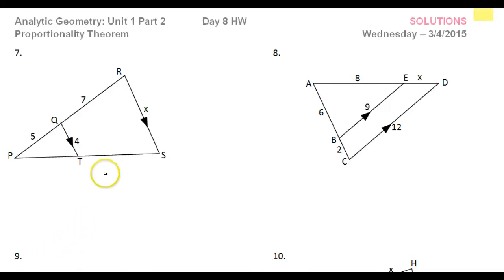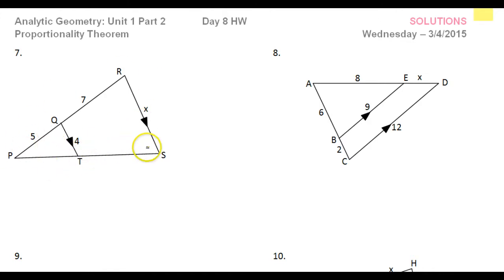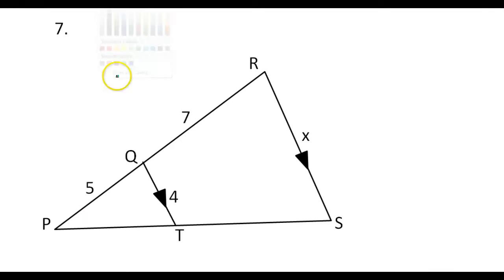In this video, we will continue solving triangles where you have parallel sides making the small triangle similar to the large triangle. We have learned about the side splitter theorem, which we will use a lot, where we can do things like 6 over 2 equals 8 over x. But on problems like number 7, we must be very careful not to use the side splitter theorem for the base of the triangle.